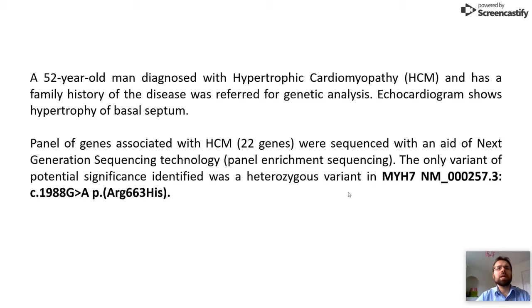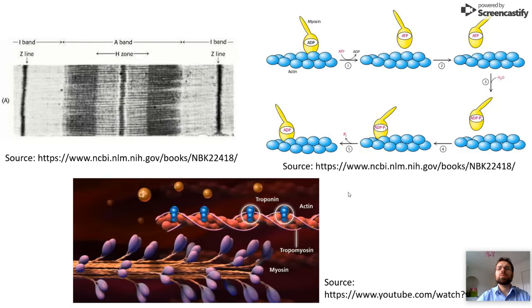This individual had 22 genes associated with hypertrophic cardiomyopathy sequenced using NGS and the only variant that came back was a heterozygous variant on the MYH7 gene, which results in arginine 663 substitution to histidine.